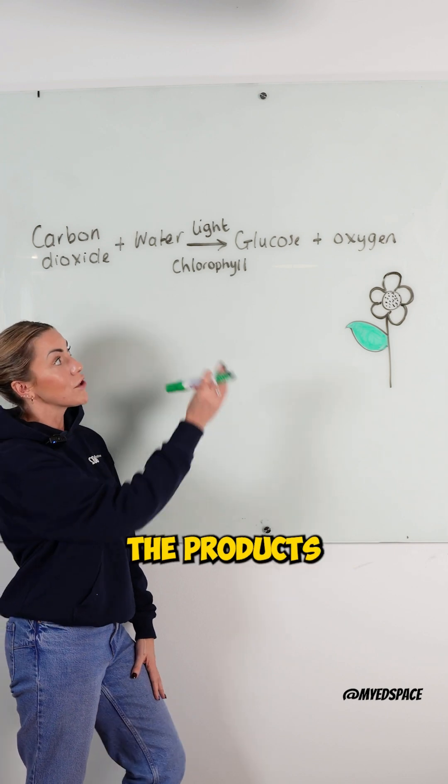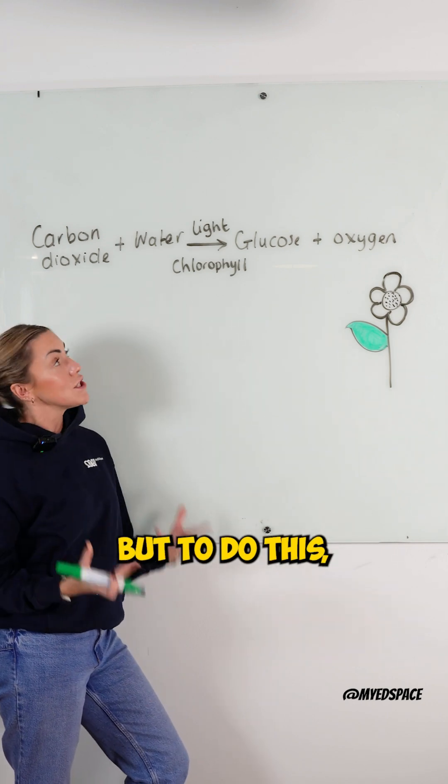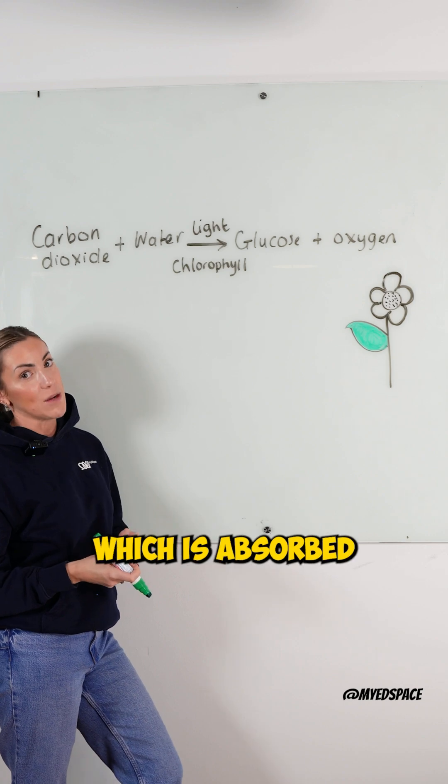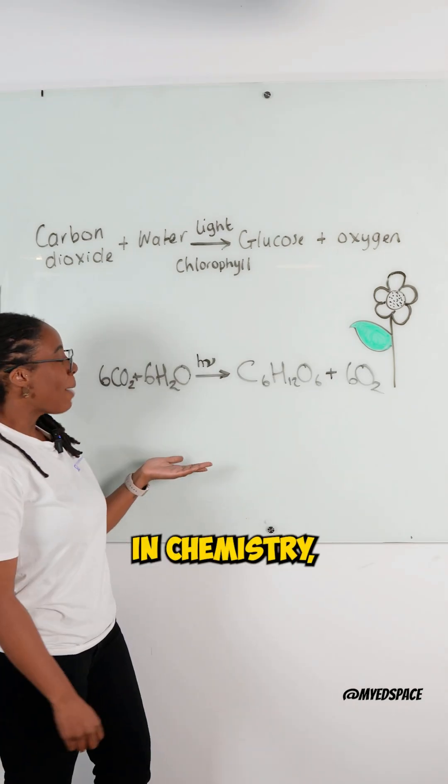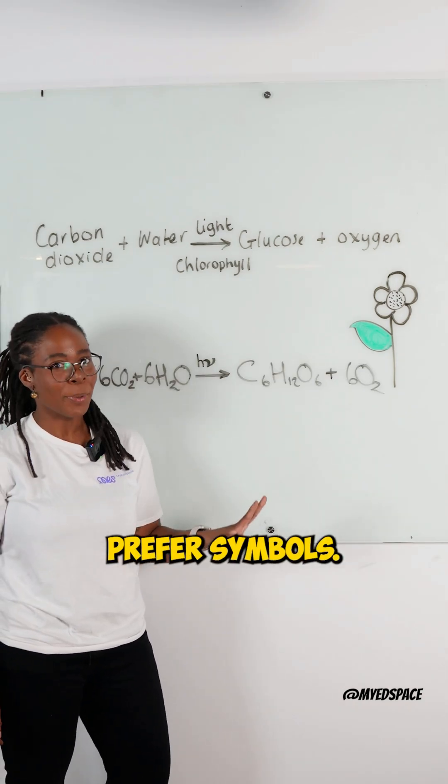They use these two reactants to make the products glucose and oxygen, but to do this they require light energy, which is absorbed by chlorophyll in the chloroplasts.